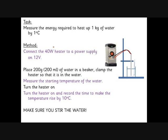You've done this experiment and the point of it is to work out how much energy it takes to heat up one kilogram of water by one degree C. That is the quantity we call specific heat capacity. We can't heat up one kilogram of water because it takes a long time, and we don't want to warm it up by just one degree C because that's not very accurate — it's quite hard to measure temperature accurately to one degree C.